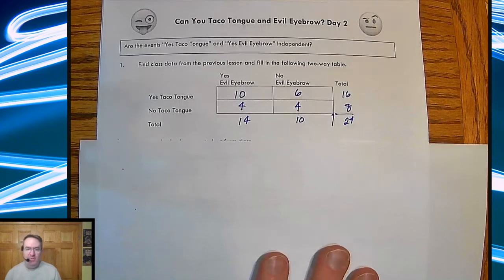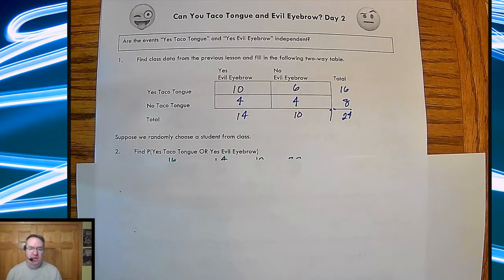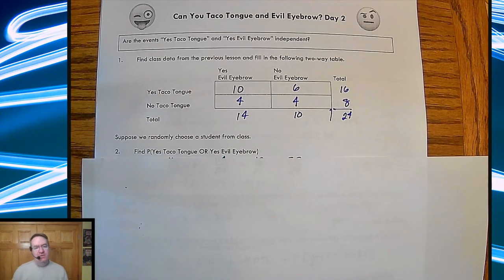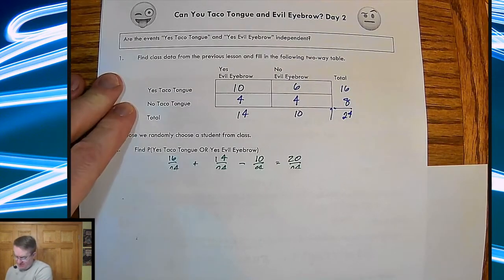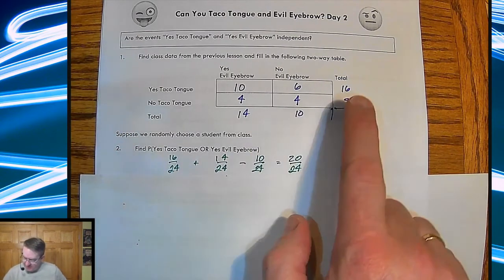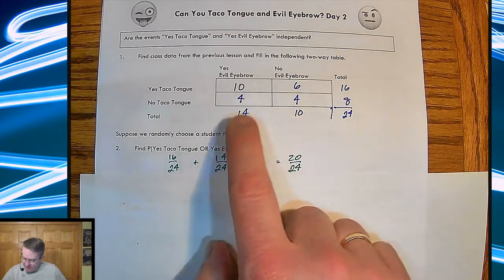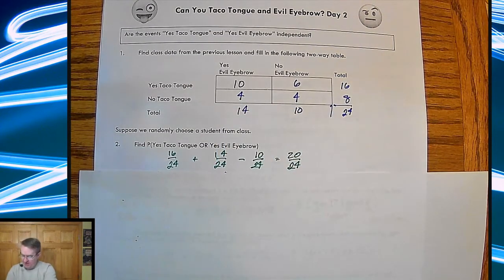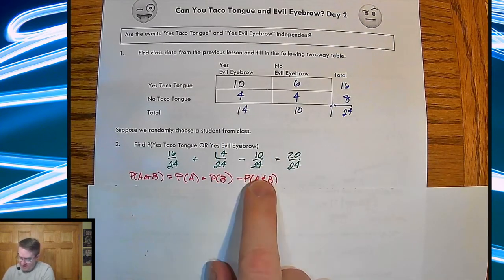So here we go. Suppose we randomly choose a student from class. The first question is, what's the probability of yes, they can taco tongue or yes, they can evil eyebrow? Same question. I think we ended the main lesson from last time. So we've got, this is how many people can taco tongue. We've got 16 out of the 24.